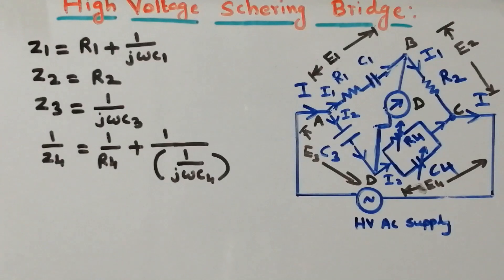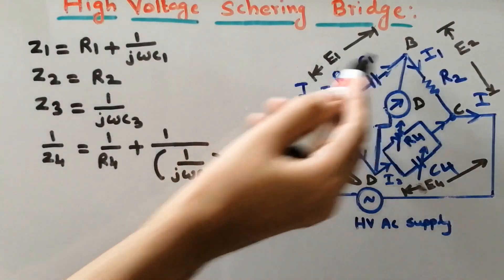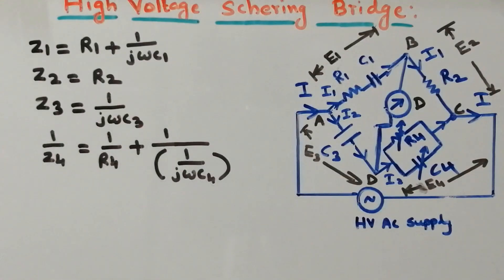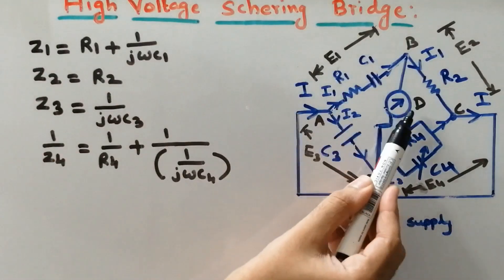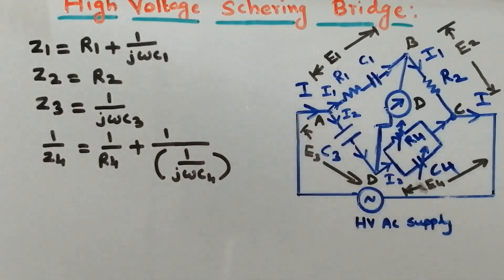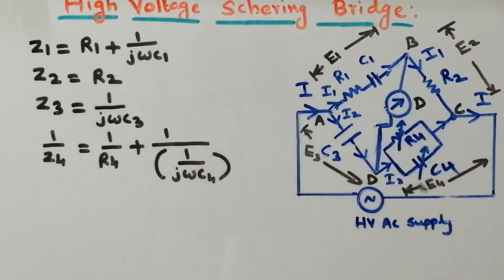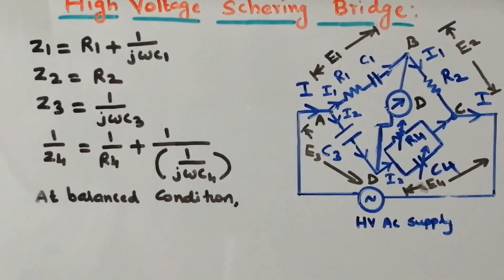The ultimate goal — I will be repeating once again — is to calculate the value of R1 and C1, both of which are unknown, representing the equivalent circuit of insulation or dielectric material. Now let us apply the Wheatstone's Bridge principle. According to Wheatstone's Bridge principle, the bridge will be balanced when the galvanometer or detector shows null deflection. At that time, we know the bridge is balanced, and we can apply the bridge balancing principle.